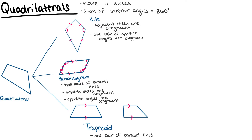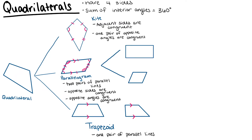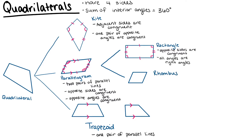We can further define parallelograms based on the type of parallelogram they are. First, we have a rectangle. Rectangles are a type of parallelogram where not only are the opposite sides congruent, but all four angles within this shape are right angles. Or, we can define parallelograms as a rhombus. Opposite sides are congruent, but furthermore, every side is congruent to each other. So all sides are the same size, and opposite angles are congruent.